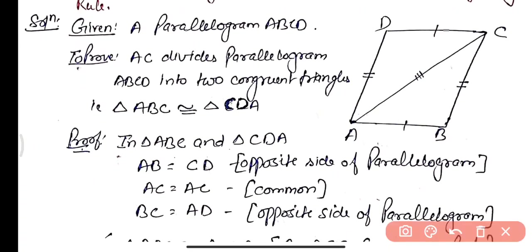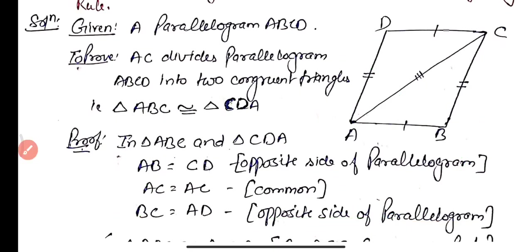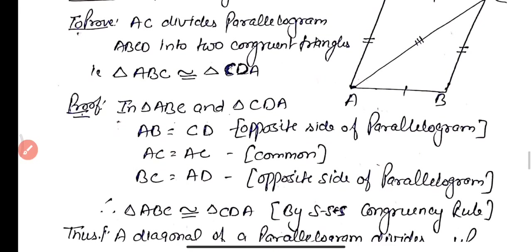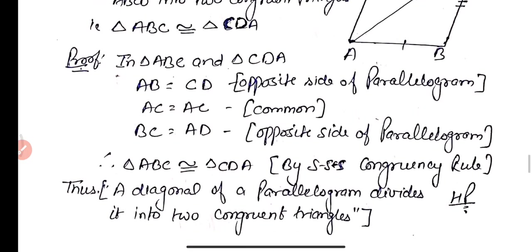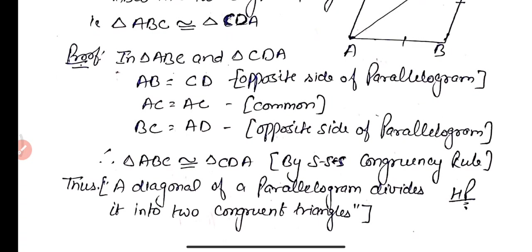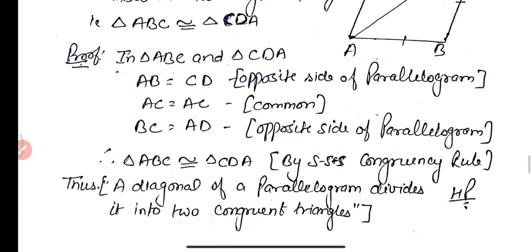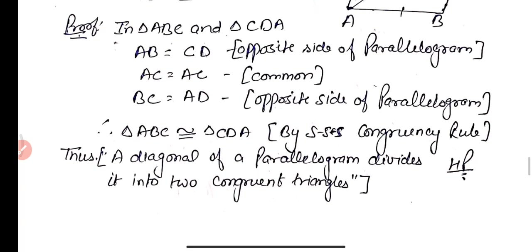AC is common to both and BC equals AD as opposite sides of the parallelogram. So triangle ABC is congruent to triangle CDA by the Side-Side-Side congruency rule. Thus a diagonal of a parallelogram divides it into two congruent triangles.